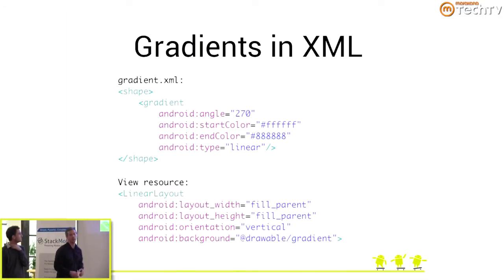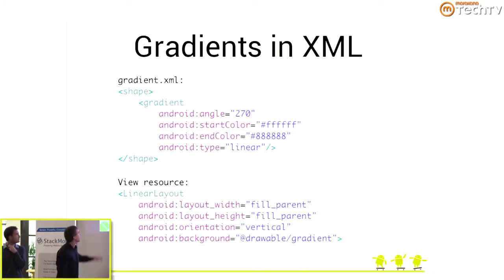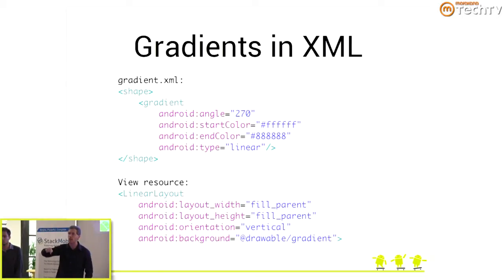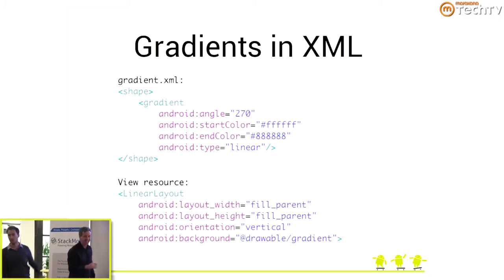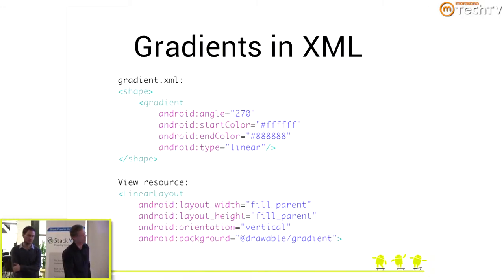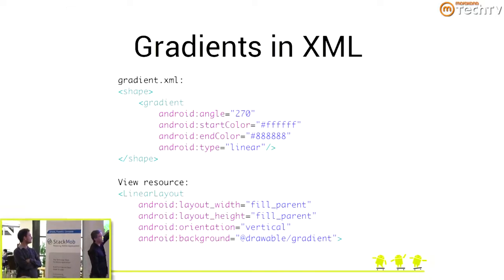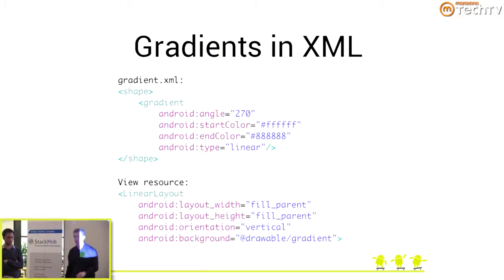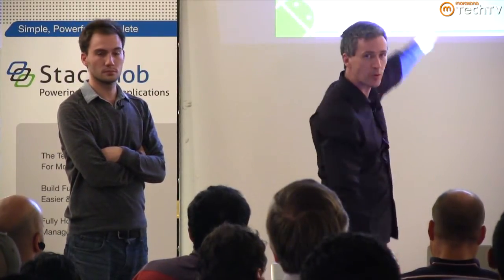If you want to know how to use gradients, they're very easy. Here's a little XML: angle 270 means a vertical gradient going from top down. It starts from white, goes to light gray, and it's a linear gradient versus a radial one. You can include this in a container as the background by referencing the resource. If you want to do it programmatically in Java, define an array with two colors and create a new gradient drawable.